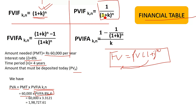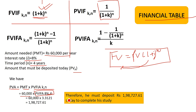We calculate 1 divided by (1 plus 0.08), which equals 1 divided by 1.08. After completing the present value interest factor of annuity calculation for 8% and 4 years, therefore he must deposit Rs. 1,98,727.61 today to complete his payments.